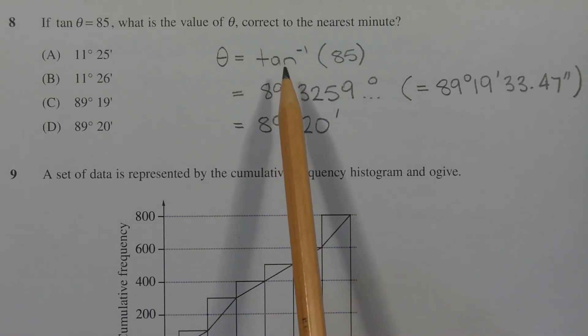Ensuring your calculator is in degrees mode, shift tan or inverse tan of 85 is equal to 89.3259 and so on degrees. And then using the degrees, minutes, seconds function on your calculator, that equals 89 degrees, 19 minutes and 33.47 seconds.